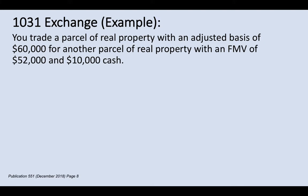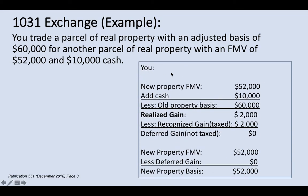Let's see an example of a 1031 exchange. You can find this in IRS Publication 551 on page 8. Say you trade a parcel of real property with an adjusted basis of $60,000 for another parcel of real property with a fair market value of $52,000 and $10,000 cash. So what are you going to receive? You receive the new property with a fair market value of $52,000, plus $10,000 cash — total received is $62,000. You give up your own property with a basis of $60,000.